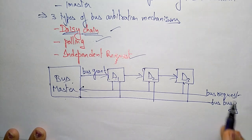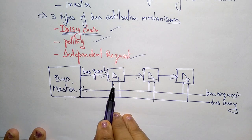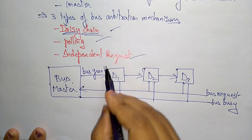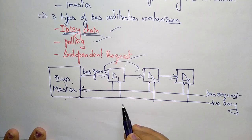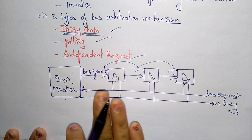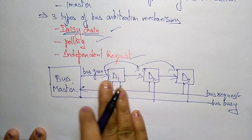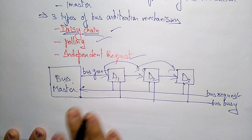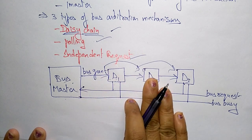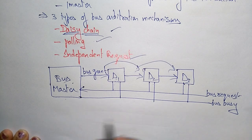After D1 completes its operation and releases the bus, the master gets the information that D1 has freed the bus. The bus grant is then sent to D2, but only after checking that D1 has released. If D1 has not released, D2 must wait. After D2, the grant goes to D3 — operating in sequential form: D1, then D2, then D3.